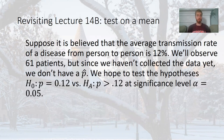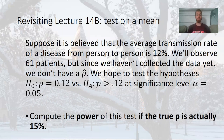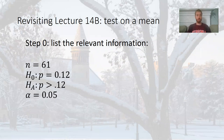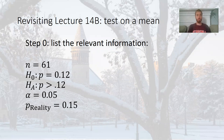Let's revisit an old familiar example from lecture 14B. Suppose we believe the average transmission rate of the disease is 12%. We're going to observe 61 patients. Suppose we haven't collected the data yet, so we don't yet have our p-hat. We hope to test the hypotheses that p equals 12% versus an alternative that it's greater than 12% at alpha equals 0.05. Let's compute the power of this test if the true parameter is actually 15%. When we talk about power, we have to speculate what the reality actually is. How often are we going to detect that reality? What we saw previously was how to do this with Monte Carlo, and I'll review that so we know what the answer is going to be before we do this mathematically.